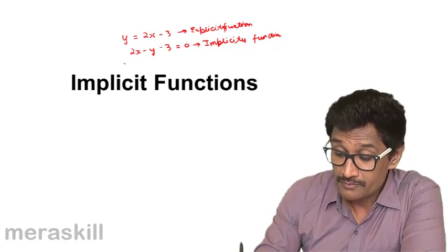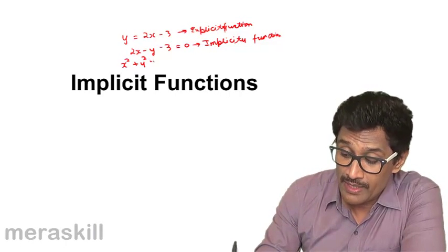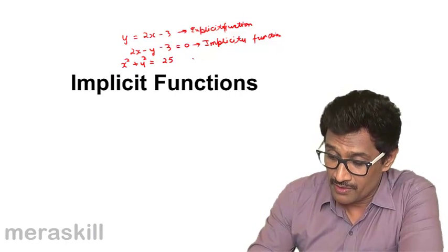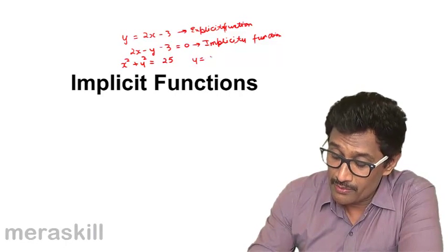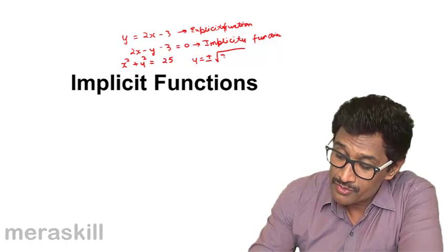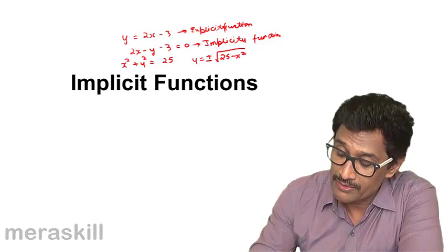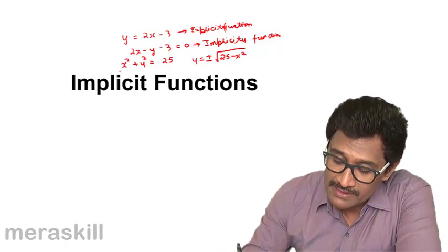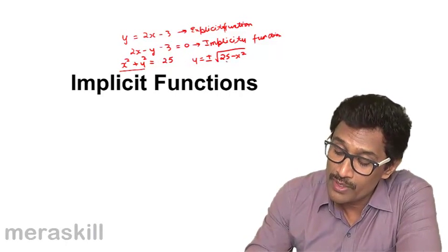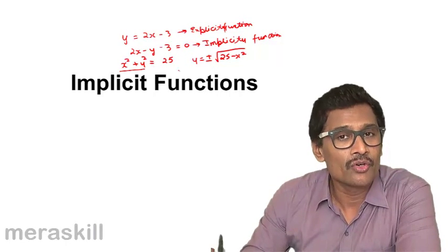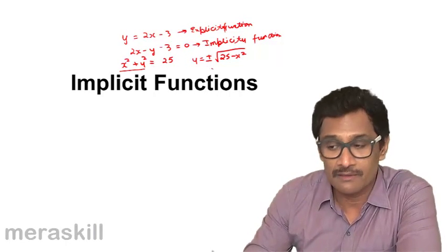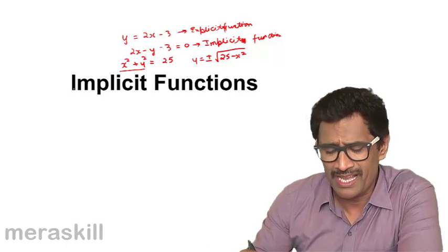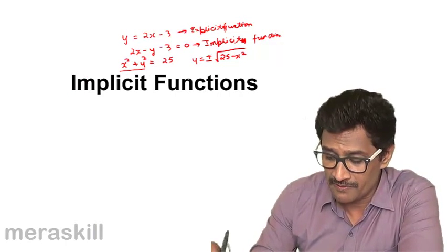Suppose you have x² + y² = 25 — this is an implicit function. Here y would be equal to ±√(25 - x²). That means if you try to convert it into an explicit function, for a single implicit function there are two explicit functions. So in such cases there is a difference in the concept of implicit and explicit functions.